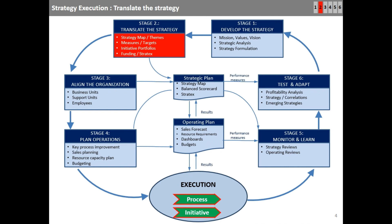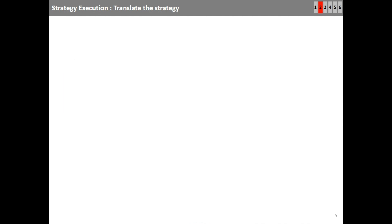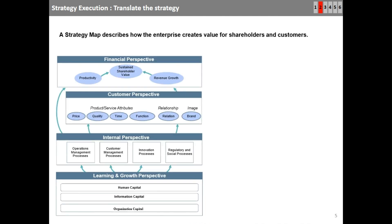We discuss four perspectives: financial, customer, internal processes, and learning and growth. A strategy map describes how the enterprise creates value for shareholders and customers. In a recent update of the Execution Premium methodology, Dr. Kaplan and Dr. Norton recommended using perspectives like outcomes, stakeholders, processes, and enablers. How to define perspectives depends on your type of organization and the nature of your business and department.